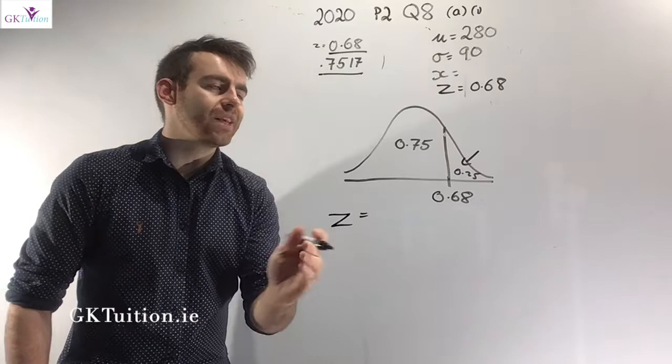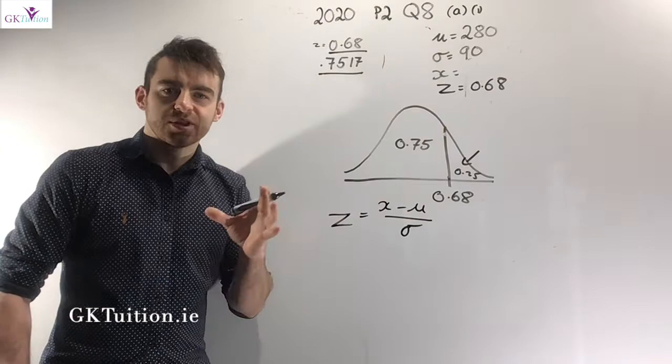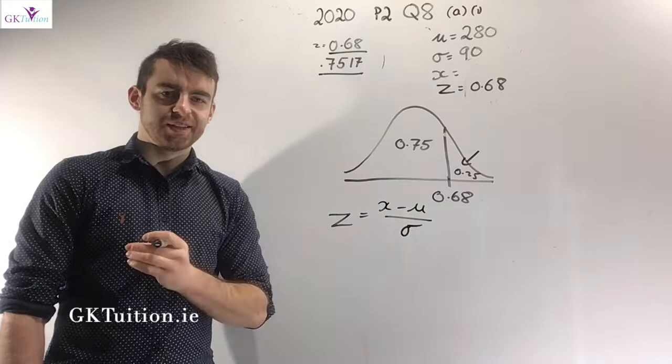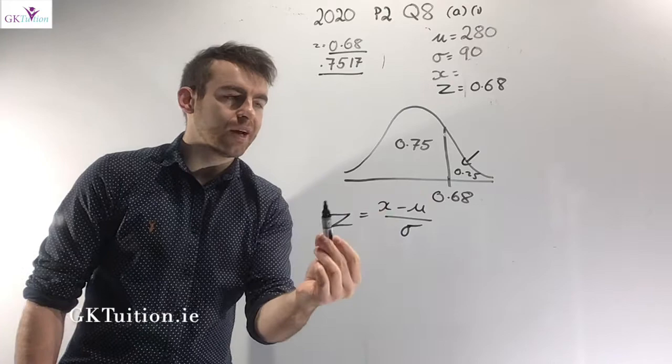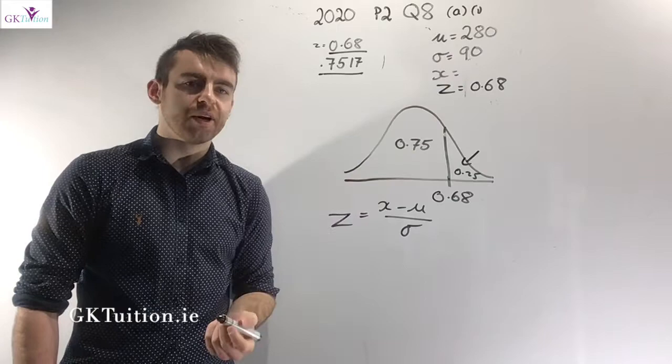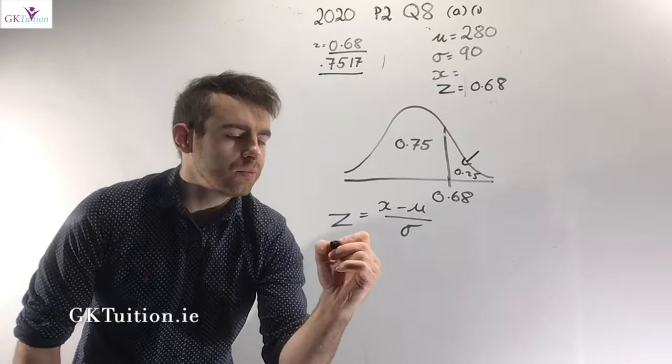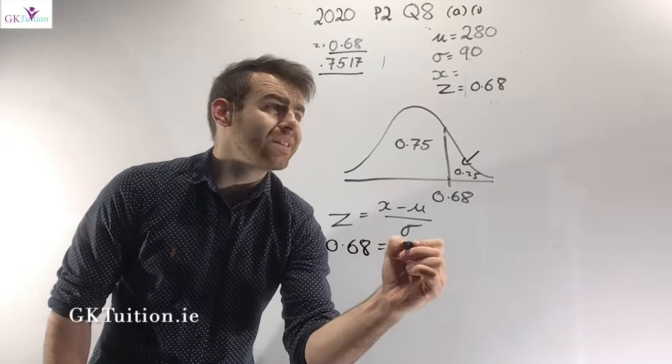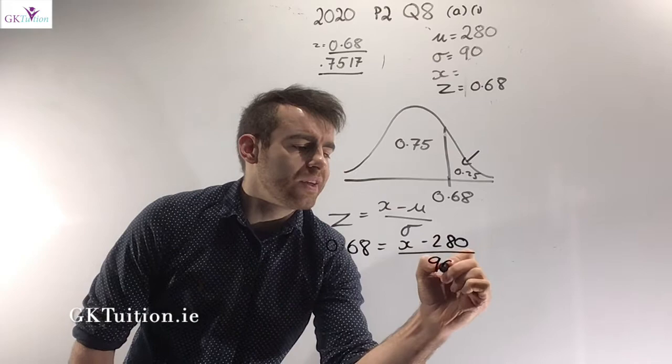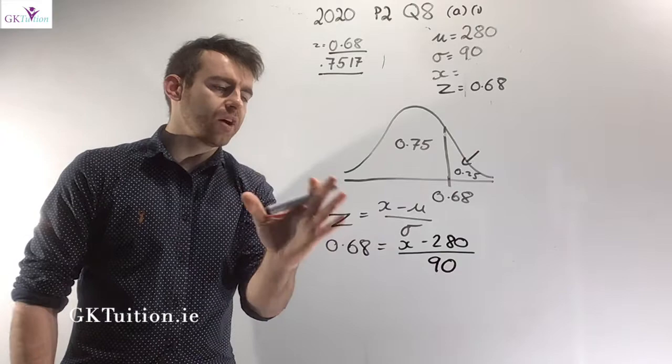Going to the maths tables, the formula is z = (x − mu) / sigma. In earlier tutorials we used this formula to find z, but here we know z and are trying to find x. We know three of the four variables, so we simply substitute in to get our final answer for this part.